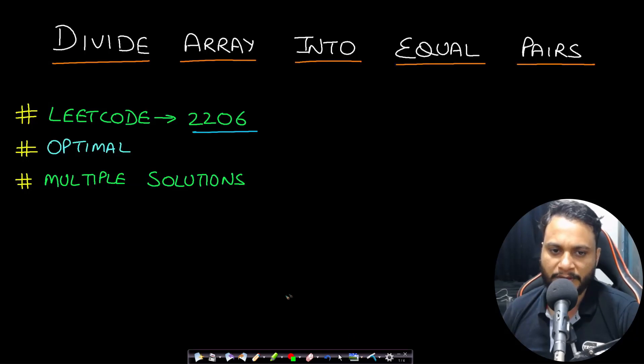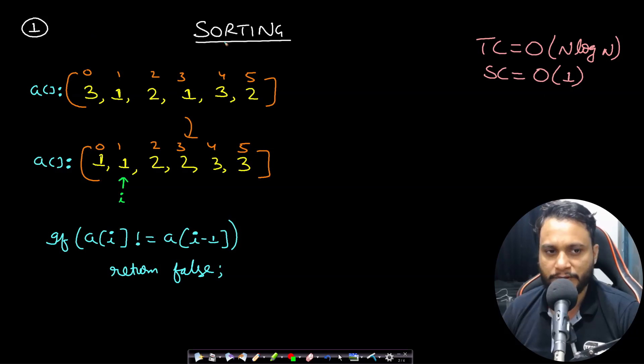The first approach is by using sorting where you can take the array and sort it in ascending order. If you are able to pair up, you will start an iterator from one and check array at i with array at i minus one. If they are equal, make a jump of two size and again check array at i with i minus one.